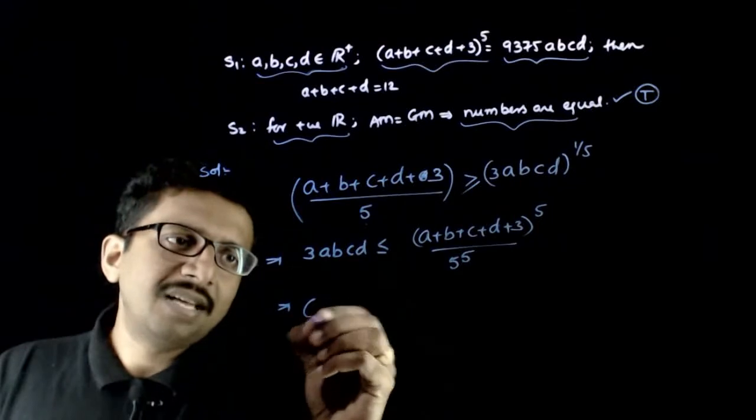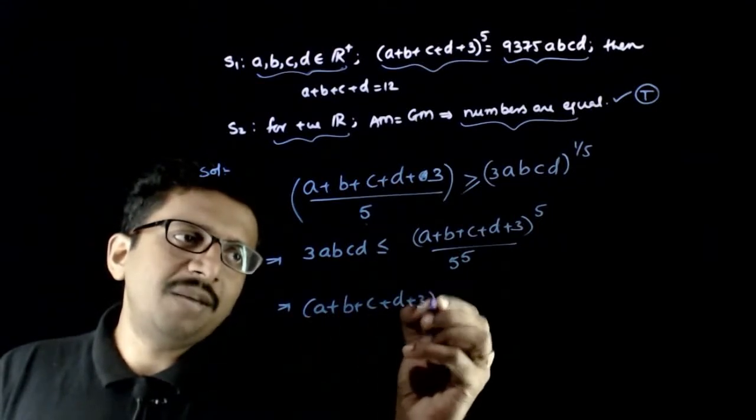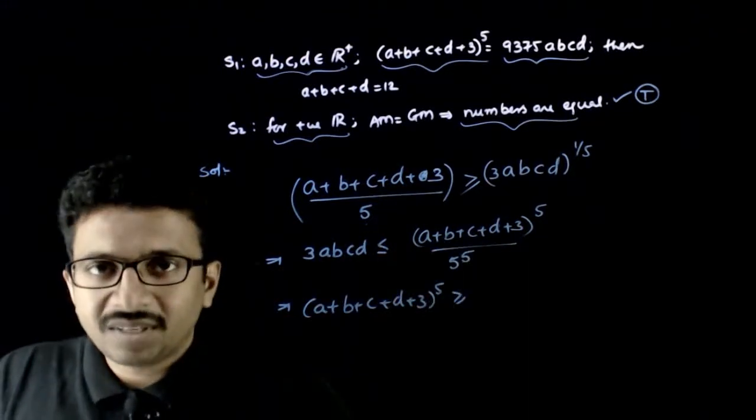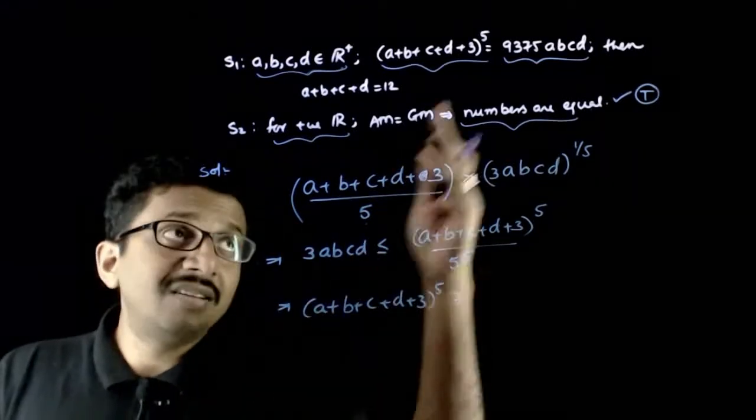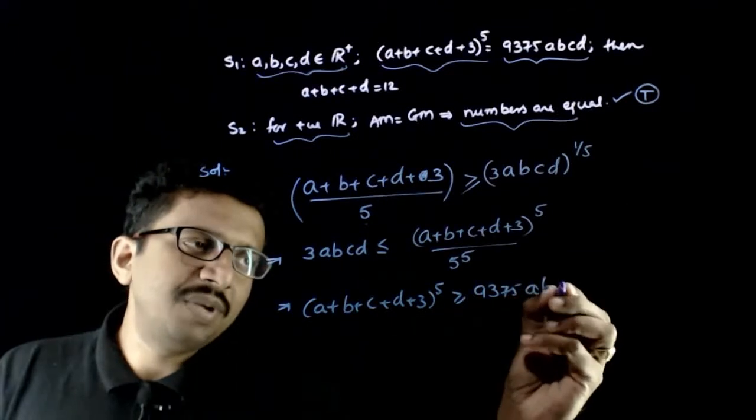This implies a plus b plus c plus d plus 3 power 5 will always be greater than or equal to 5 power 5 is 3125. 3125 into 3 is nothing but 9375 abcd.